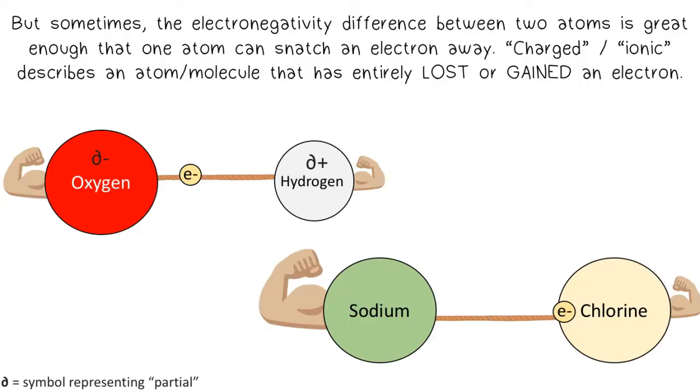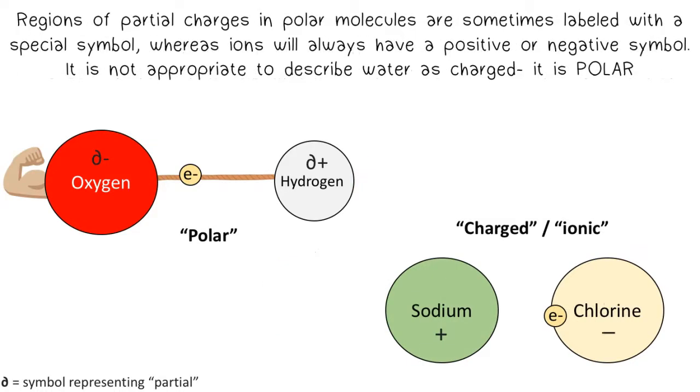Charged, or ionic, describes an atom or molecule that has entirely lost or gained an electron. Regions of partial charges in polar molecules are sometimes labeled with a special symbol, whereas ions will always have a positive or negative symbol. It is not appropriate to describe water as charged. It is polar.